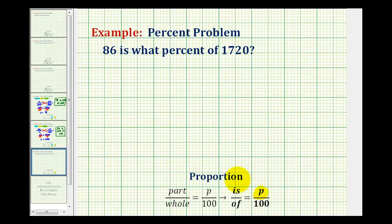And then for the other ratio, the number associated with is will be in the numerator, and the number associated with of will be in the denominator. Of course, one of these will be unknown, represented by a variable, so then we'll cross-multiply and solve.